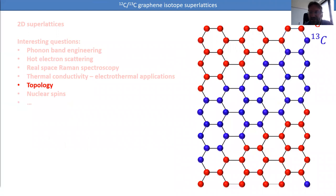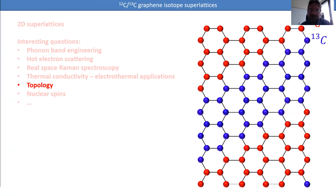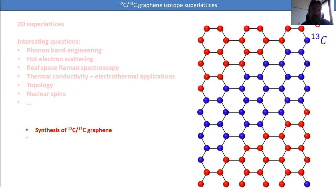Topology is also potentially quite interesting with isotope superlattices. By looking at an alternating mass system, you can show it's essentially equivalent to an SSH model, which exhibits topological edge states. There are also nuclear spin considerations — carbon-13 has a nuclear spin while carbon-12 does not — and this is actually the reason we started working on isotope graphene, though I won't go into much detail on that here.